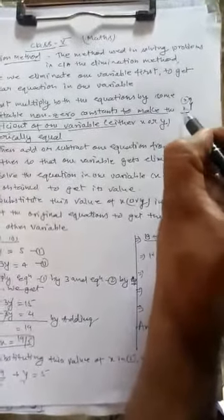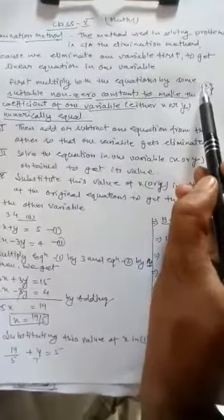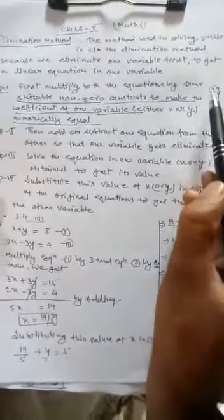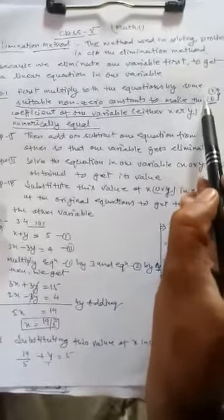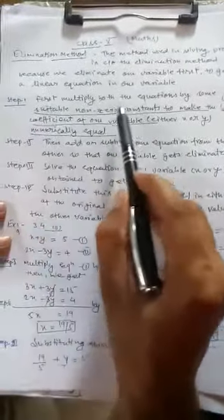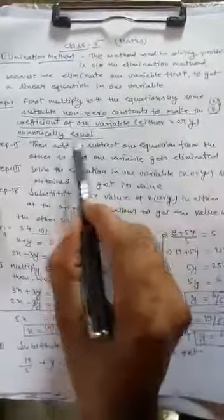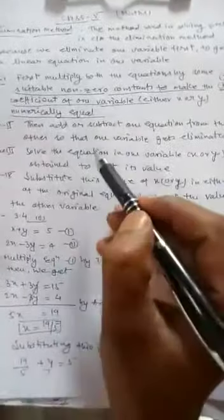The variables will only eliminate if their coefficients are the same. So this step is very important: focus on whichever variable you want to eliminate and multiply both equations by a suitable non-zero constant to make the coefficients of that variable numerically equal in both equations.